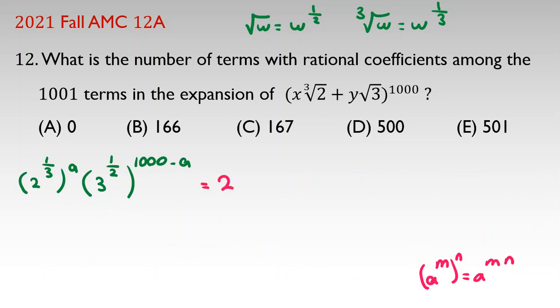Now, the first term is 2 to the power of 1 over 3 times a, which is a over 3 times 3 to the power of 1000 minus a over 2. If we want to reach a rational coefficient, the powers should be integers.